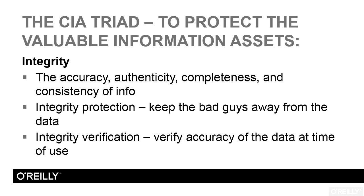Finally, consistency of information deals with the fact that in many cases we will have multiple copies of the same information. Perhaps we have a copy of the database in Oshkosh and a second copy in Schenectady. This is done for redundancy, capacity, and geographic distribution — load balancing to reduce wait times. But suppose the copy in Oshkosh shows 500 people from California, while the copy in Schenectady only shows 214 people from California. These two copies are inconsistent, and therefore the integrity of the information is reduced.